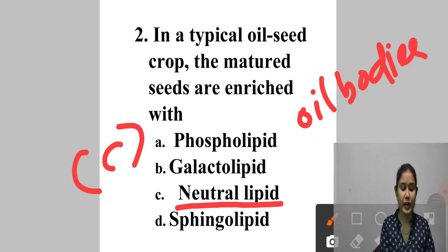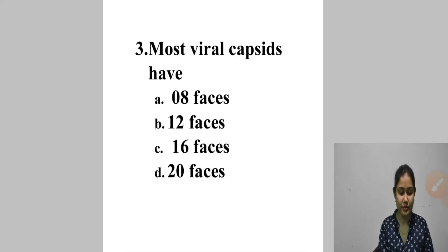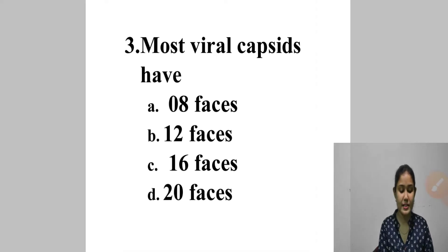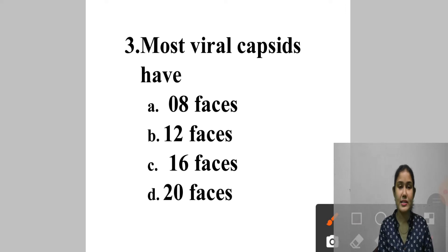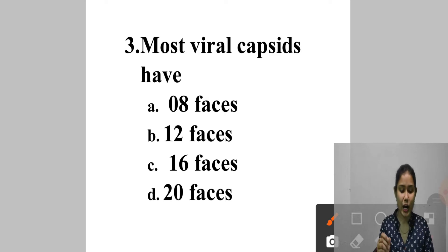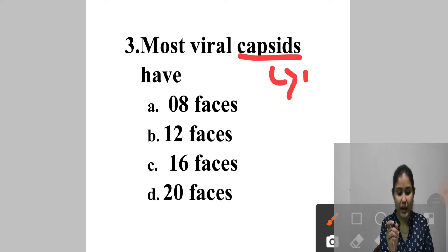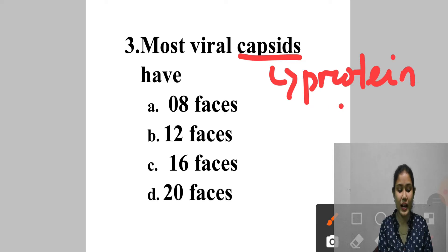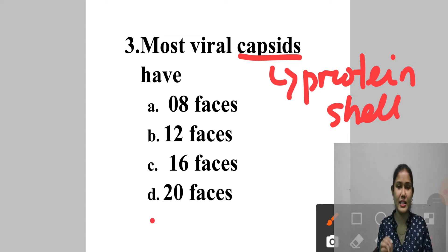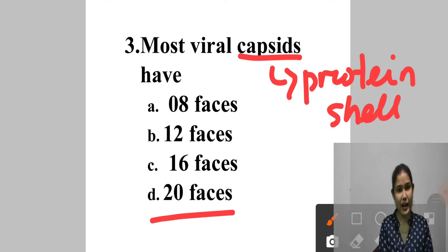Question 3: Most viral capsids have — A. 8 faces, B. 12 faces, C. 16 faces, D. 20 faces. The capsid is the protein shell of a virus. The icosahedral shape has 20 equilateral triangular faces approximating a sphere, while the helical shape is cylindrical. Most viral capsids have 20 faces. Answer is option D.